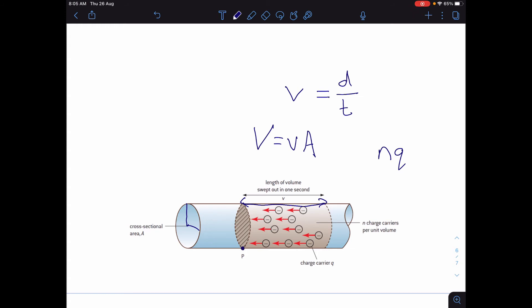So we've now got an expression for what volume there is in the wire, what volume is passing point P, and the amount of charge per unit volume. So that means that the amount of charge per unit time is equal to N, A, V, Q...